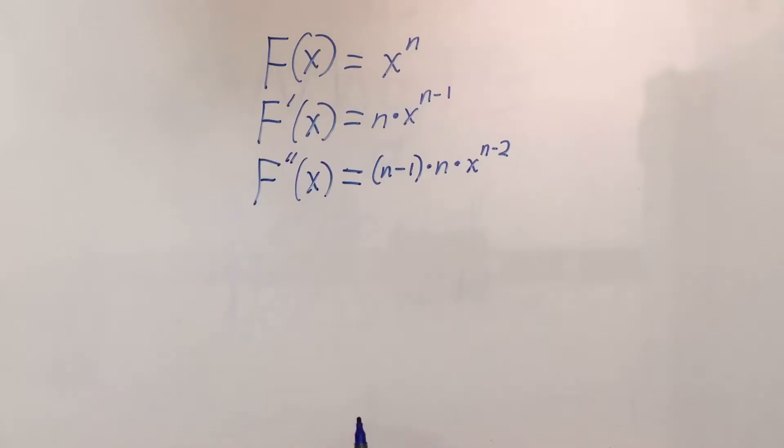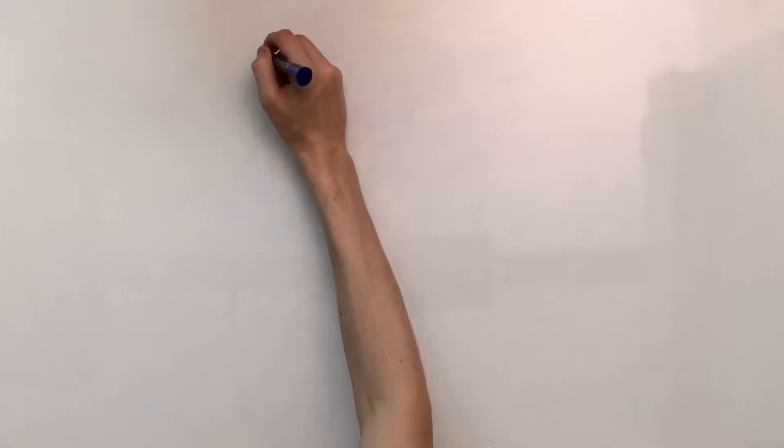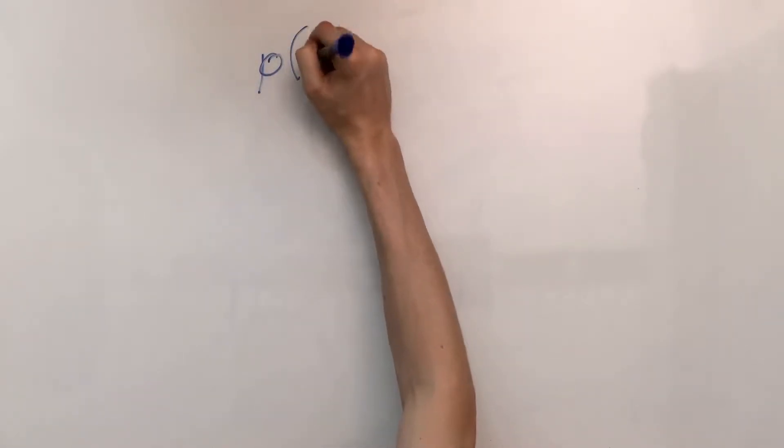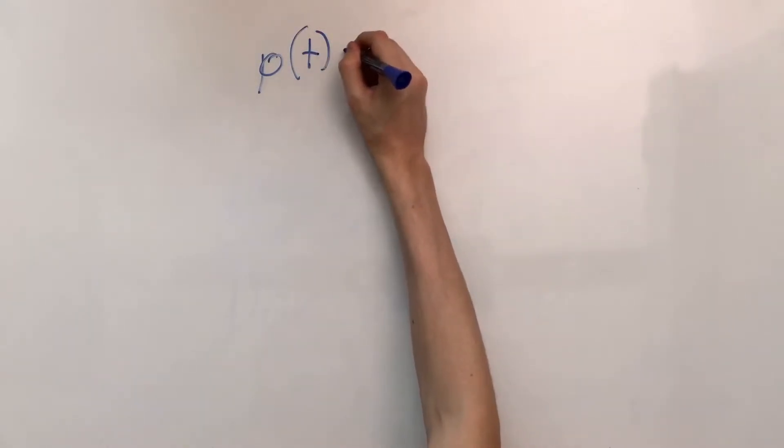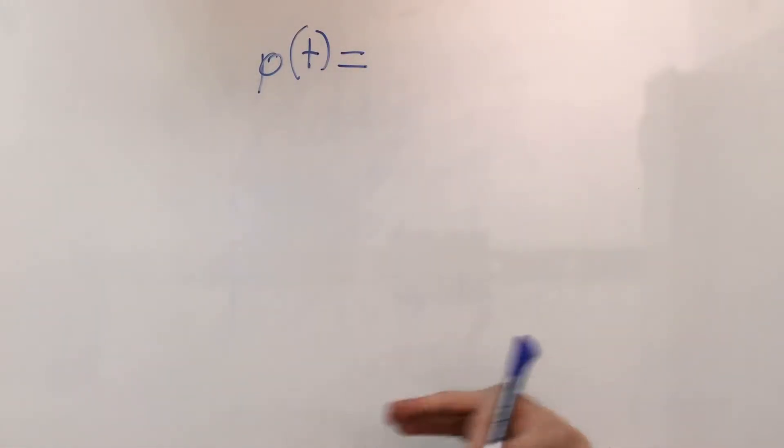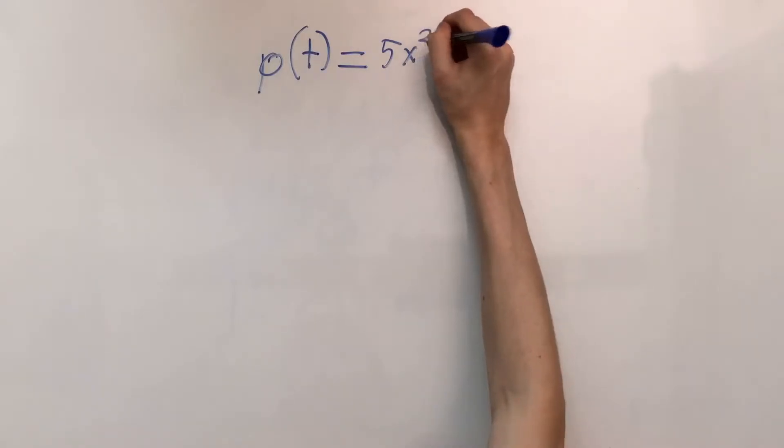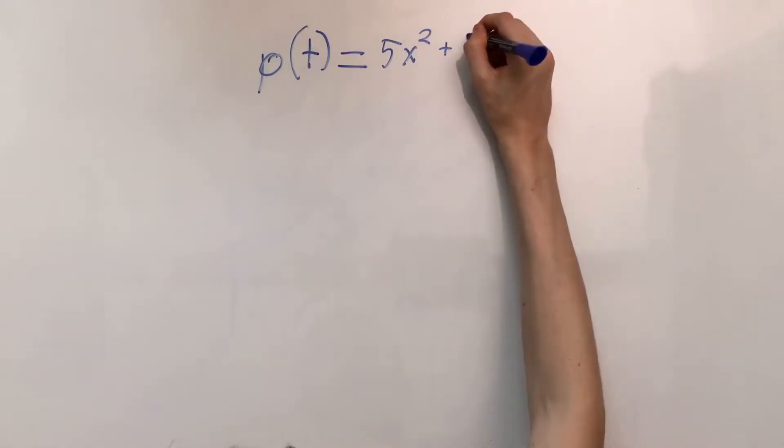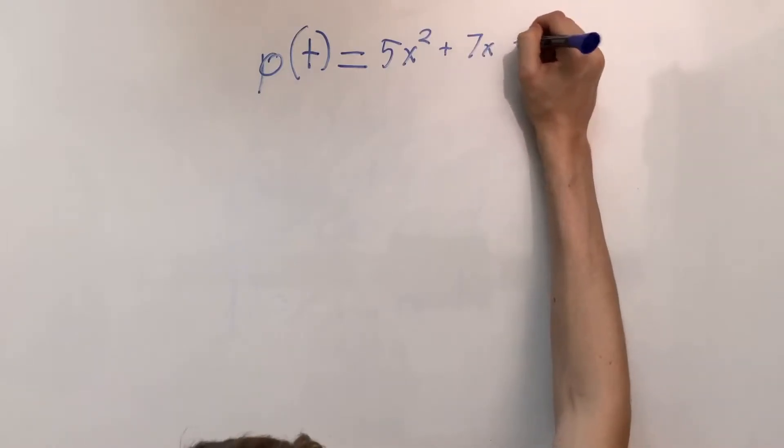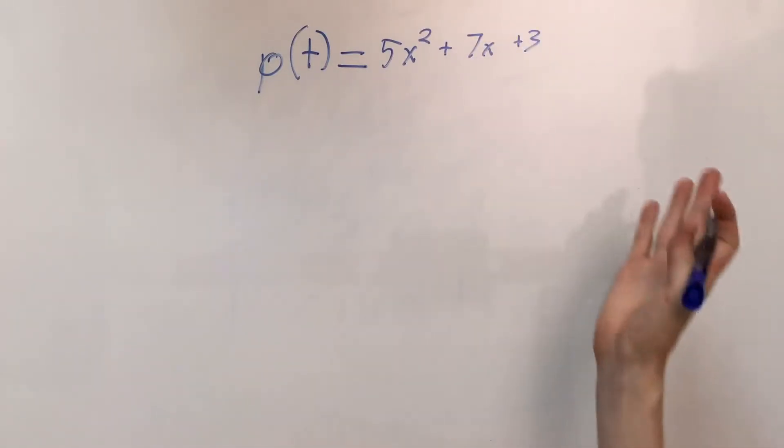And so that would be the second derivative just like that. So let's see how we can apply that to something with the position function. Let's just say that we've got a position, and we'll notate that as p in relation to time, and then we've got that equal to, let's just say, 5x squared plus 7x plus 3.